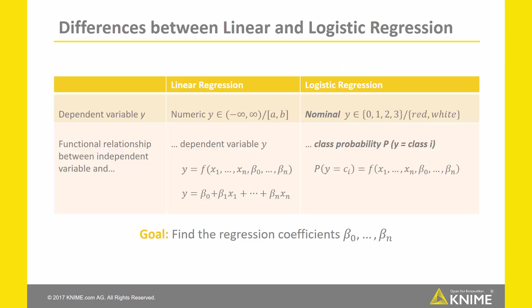Let's have a look at the differences between the logistic regression model and other regression models, for example linear regression. One main difference is that in logistic regression the dependent variable has to be nominal rather than numerical. It represents a class system with a finite number of possible nominal values.